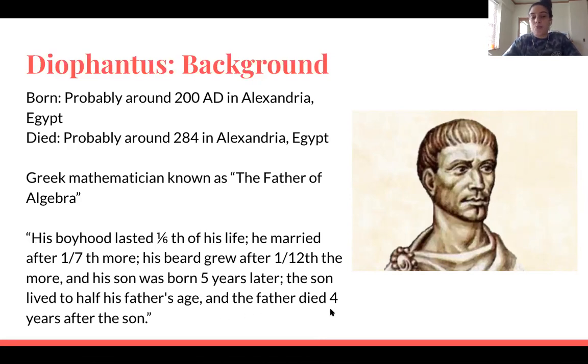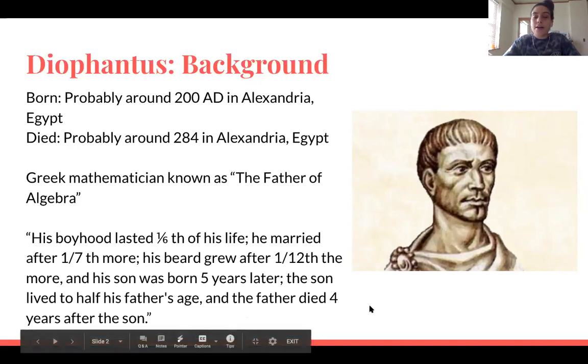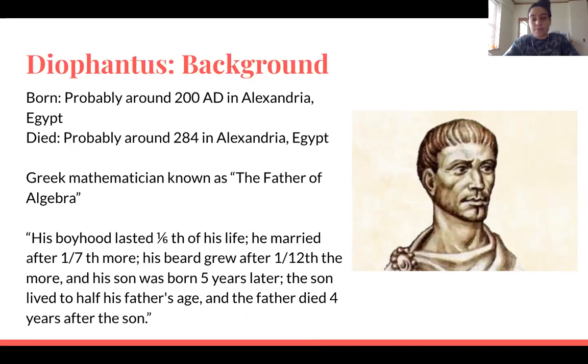And then part of the puzzle I provided down here, Metrodorus says his boyhood lasted one-sixth of his life. He married after one-seventh more, his beard grew after one-twelfth more, and his son was born five years later. The son lived to half his father's age and the father died four years after the son. So from this compilation of puzzles, we were able to determine that he was born around 200 AD and died around 284 AD.